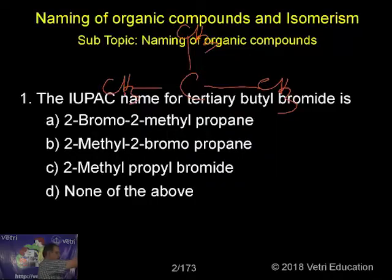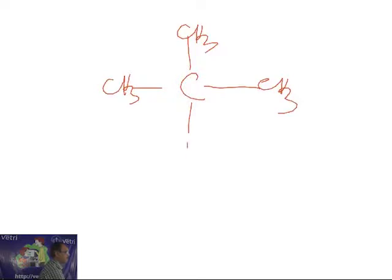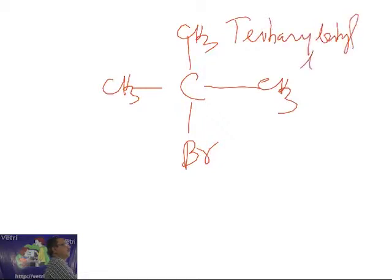Let me draw tertiary butyl bromide. I know the structure. So I can write now tertiary butyl bromide. This is the tertiary butyl bromide. This is the question asked. So what I have to do now?